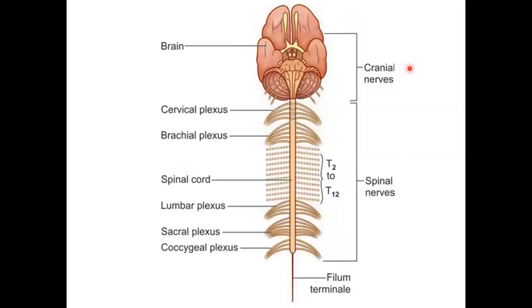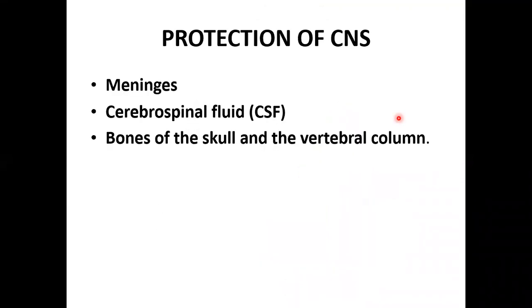The peripheral nervous system consists of the cranial nerves and the spinal nerves — 12 pairs of cranial nerves and 31 pairs of spinal nerves.